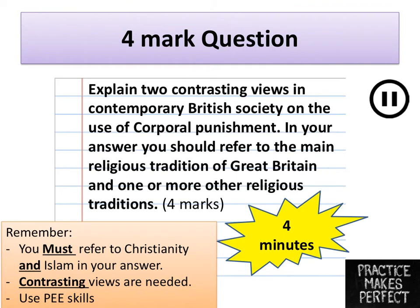It's time for us to look at an exam question. This is a four-mark question, so you'll be taking four minutes to do it. The question is: explain two contrasting views in contemporary British society on the use of corporal punishment. In your answer you should refer to the main religious tradition of Great Britain and one or more other religious traditions. There are a number of things going on in this question we need to keep in mind. When it says contemporary British society, all it means is modern-day British society — we don't need to worry about those words.